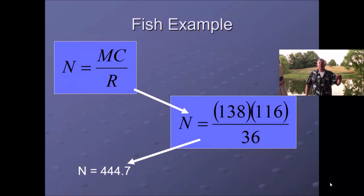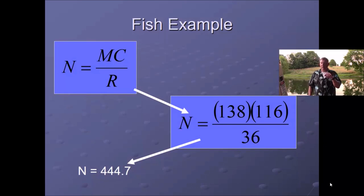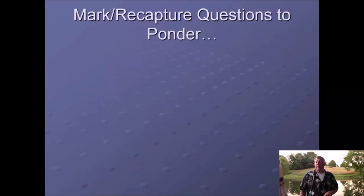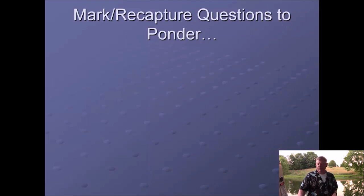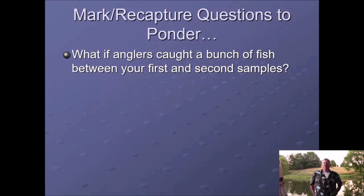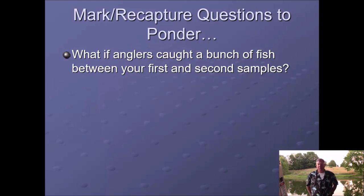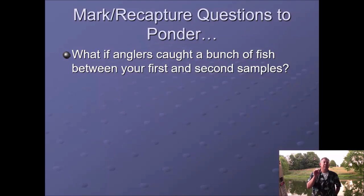The assumptions you need to know: first, equal mortality and equal emigration between the marked and the unmarked — you can have mortality and emigration as long as it's at an equal rate for both groups. Second, the marked and unmarked need to be equally likely to be captured. Third, the marked fish distribute themselves randomly. Fourth, all marks are recognized — you need trained people who know to look for a fin clip. Fifth, whereas you can have mortality and emigration, you cannot have births or immigration, because that would mess up your numbers.